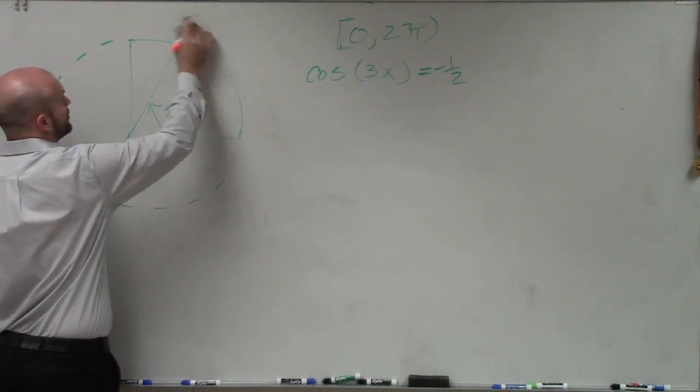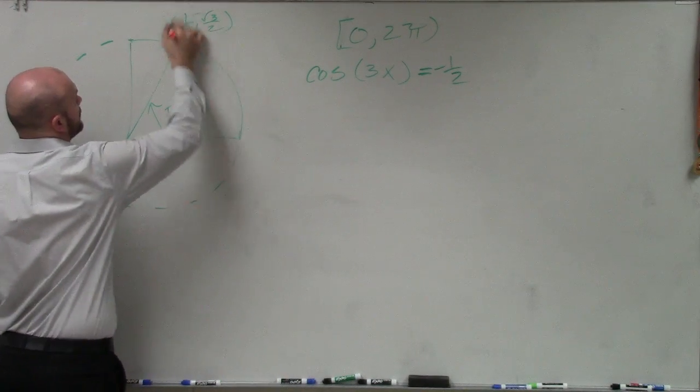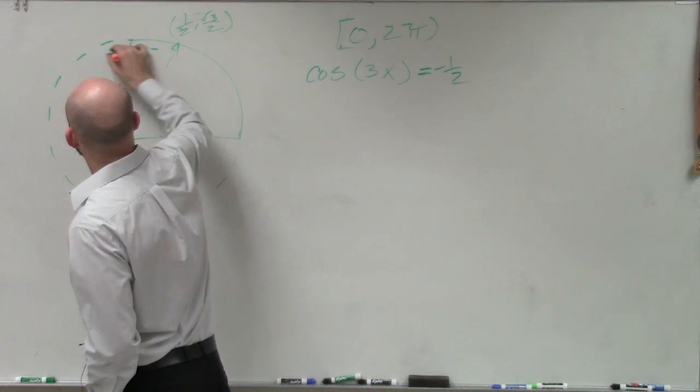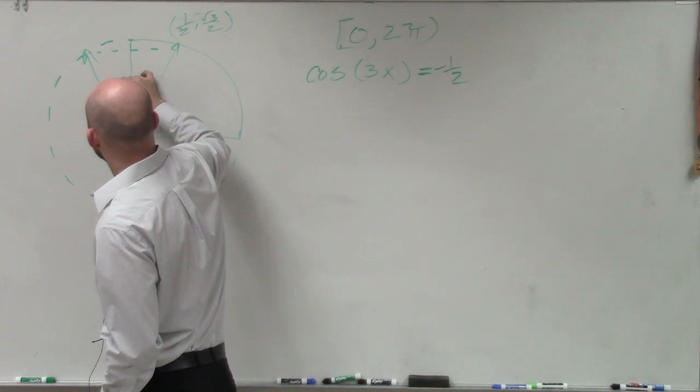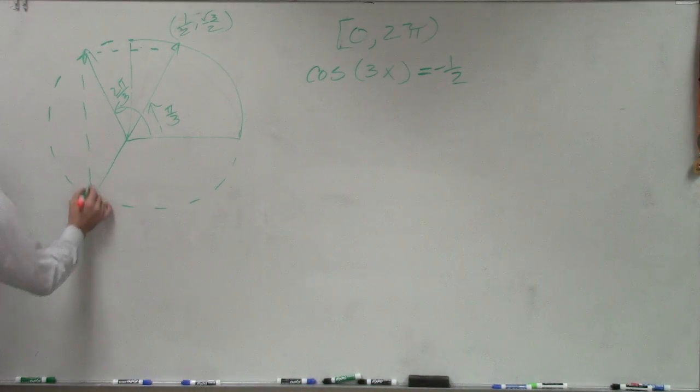But that's when it equals positive 1 half. So we just want to know when it equals negative 1 half. Well, if we reflect that over the y-axis, we know it's that angle, which is 2π over 3. And if we reflect that back in and over, because remember, for cosine to be negative, it has to be in the second and the third quadrant.